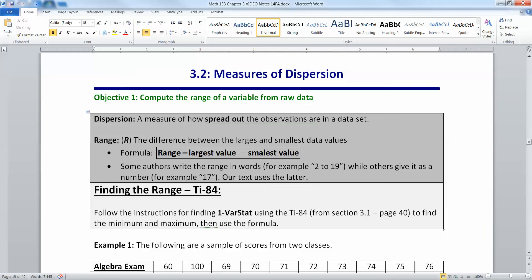There are a couple different measures of spread. Dispersion is another way to say that. If something's dispersed, then it's spread out. A dispersion is a measure of how spread out the observations are. The first measure of dispersion we're going to look at is something called the range. The range is the difference between the largest and the smallest data values in your data set. Some authors write it in words, like 2 to 19, but others give you the number 17 because 19 take away 2 is 17. Our textbook uses the latter. You might see either one.